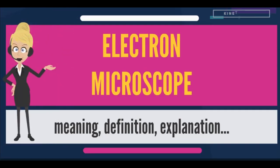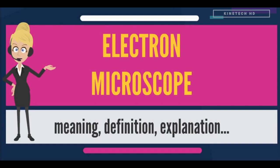An electron microscope is a microscope that uses a beam of accelerated electrons as a source of illumination. As the wavelength of an electron can be up to 100,000 times shorter than that of visible light photons, the electron microscope has a higher resolving power than a light microscope and can reveal the structure of smaller objects. A transmission electron microscope can achieve better than 50 pm resolution and magnifications of up to about 10 million times, whereas most light microscopes are limited by diffraction to about 200 nm resolution and useful magnifications below 2000 times.